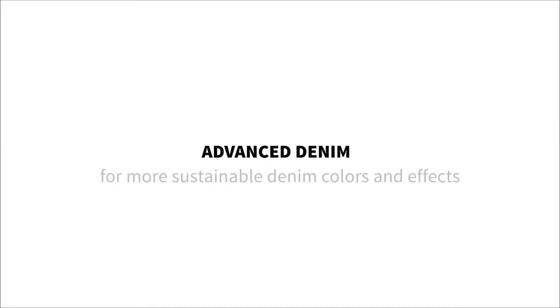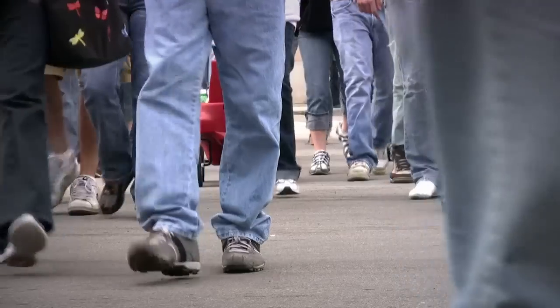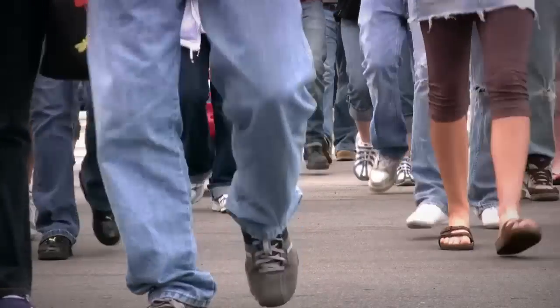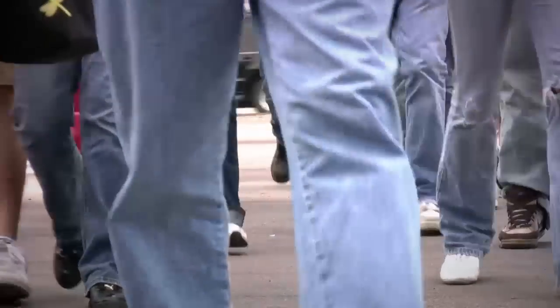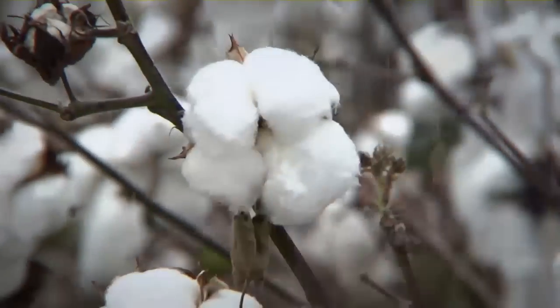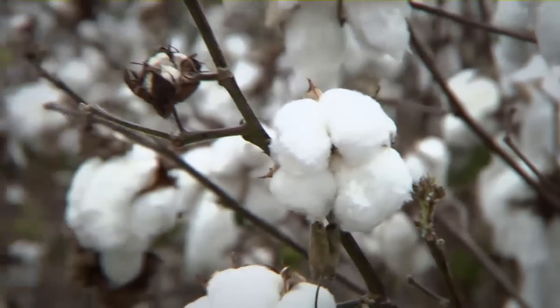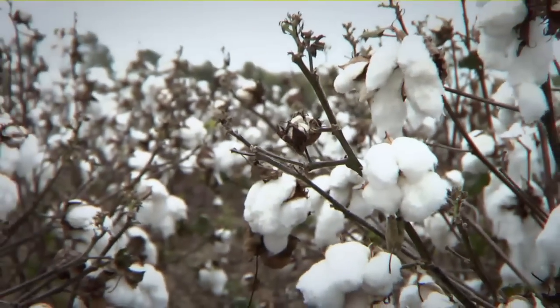Advanced denim for more sustainable denim colors and effects. Almost two billion pairs of jeans are manufactured every year. No item of clothing is more popular. The starting material is cotton, which passes through numerous processing steps from the cotton field to the finished thread.